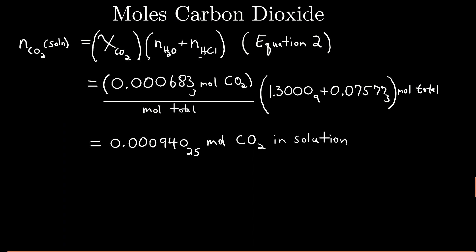Here's why we had to go through all that with the hydrochloric acid, water, and mole fraction. We want to know how many moles of carbon dioxide are in the solution. That's going to be the mole fraction of carbon dioxide in the solution — which is moles of carbon dioxide divided by the total moles — times the total moles. Total moles would be the moles of water and moles of hydrochloric acid. We can neglect the moles of carbon dioxide dissolved and a couple other things. So, the mole fraction we calculated, times the total moles of water and hydrochloric acid, gives us how many moles of carbon dioxide are in the solution.